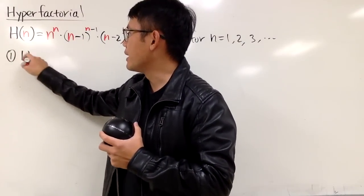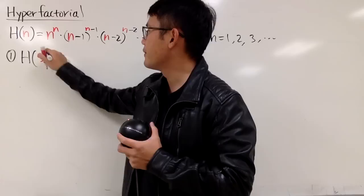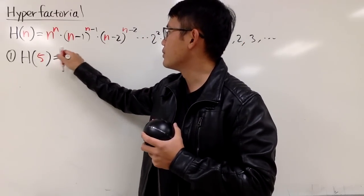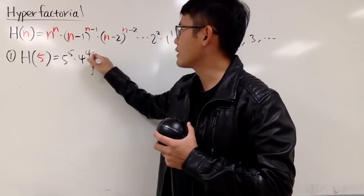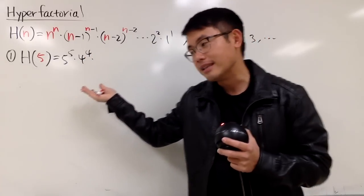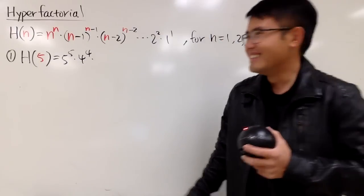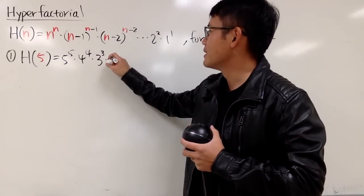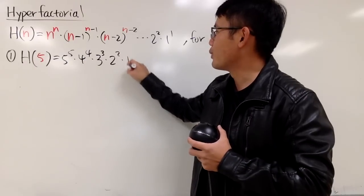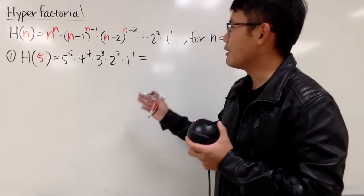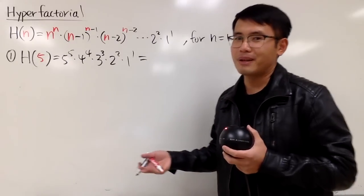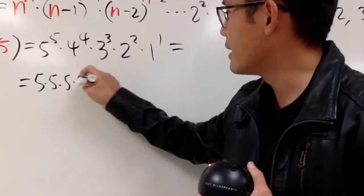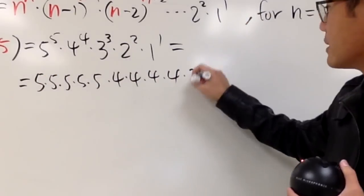Let me calculate h of 5. By definition, this is just going to be 5 to the 5th times 4 to the 4th — I think you guys can see why this is called the hyperfactorial — times 3 to the third power, times 2 to the second, times 1 to the 1. You can multiply this out: 5 to the 5th means 5 times 5 times 5 times 5 times 5, and 4 to the 4th means 4 times 4 times 4 times 4.